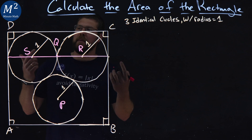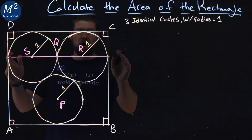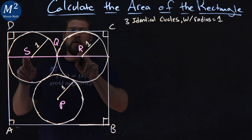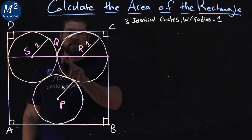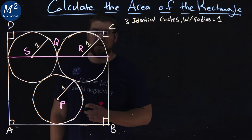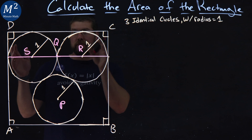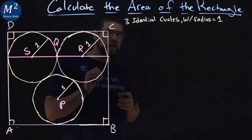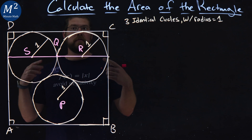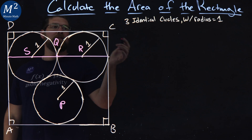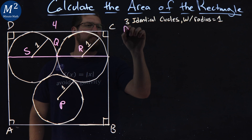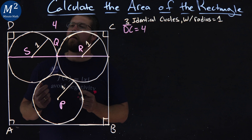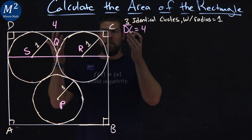So we have a line S, Q, R going on there, and we know some information about that line. What is the overall length? We have the radius, radius, radius, and radius — each one is 1 unit, meaning the overall length is going to be 4. So the length of DC here is 4. We already have one side length.